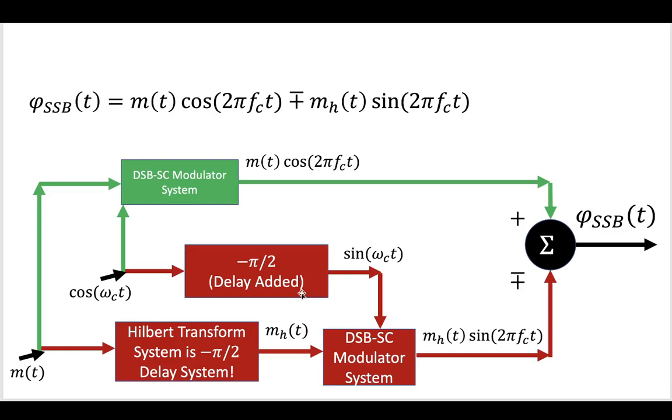Combining these together, we would take our message and put it at the input. One branch of the message would go up here into a DSBSC modulator with a cosine wave. There would be no phase delay in this part of the system. This is our typical DSBSC modulation.